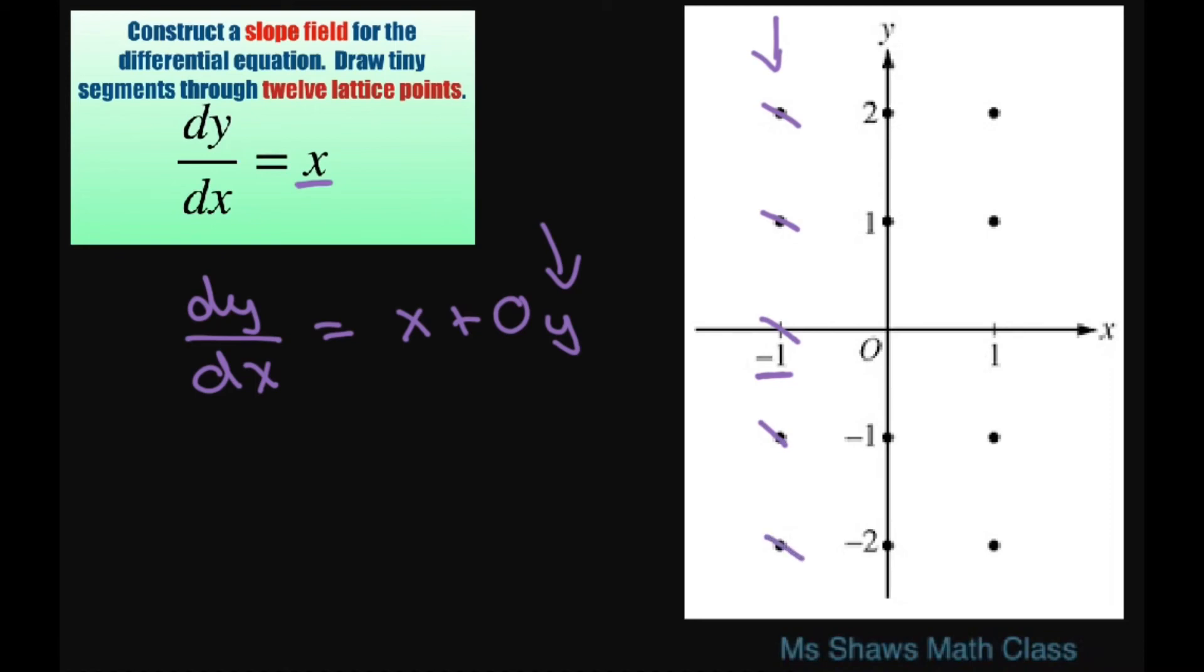Alright, and then for 0, it's just going to be a constant when x is 0. And for x equals 1, it's just going to be that 45 degree slope here.